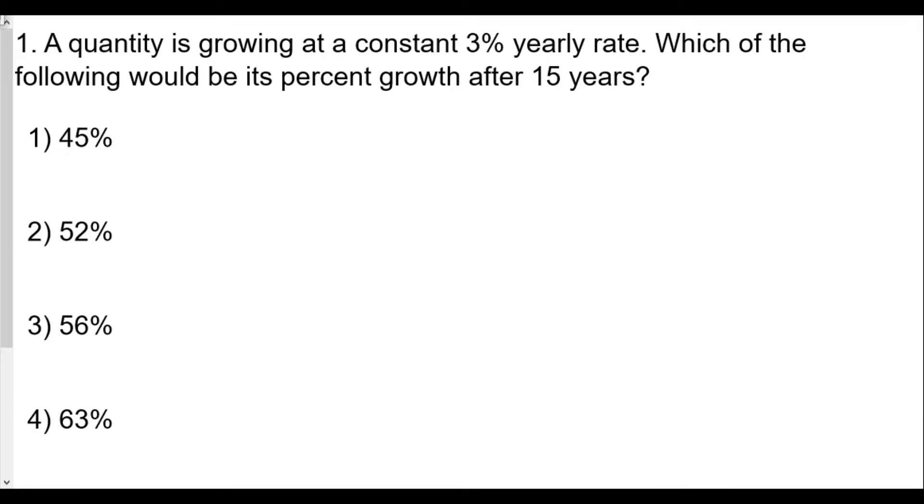Question one says, a quantity is growing at a constant rate of 3% yearly. Which of the following will be its percent growth after 15 years? Well, when trying to figure out a total amount, we can use our formula, but the idea of the formula we have A(t) equals A sub zero times one plus r raised to t power. That's trying to find a new actual amount, but when we're comparing rates, things are a little bit different though.